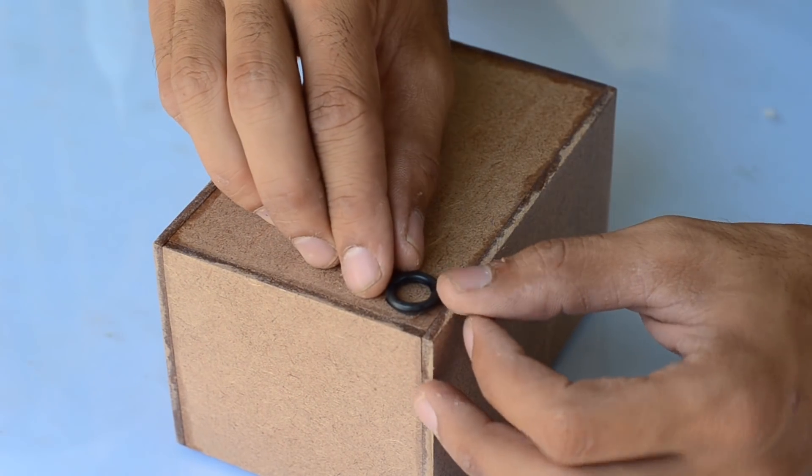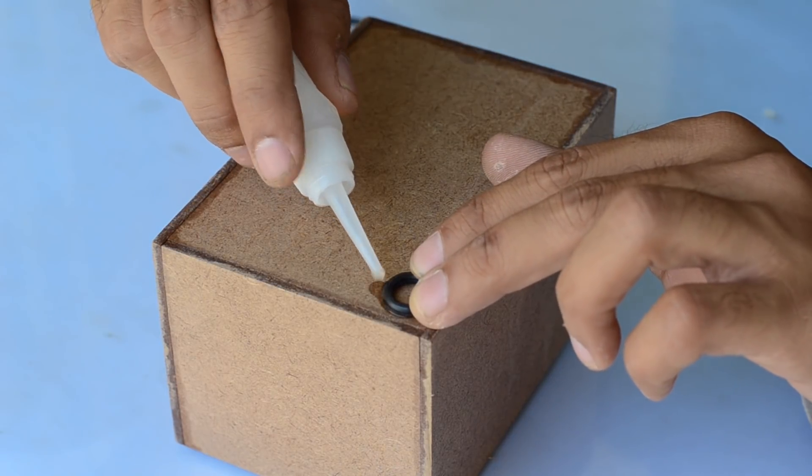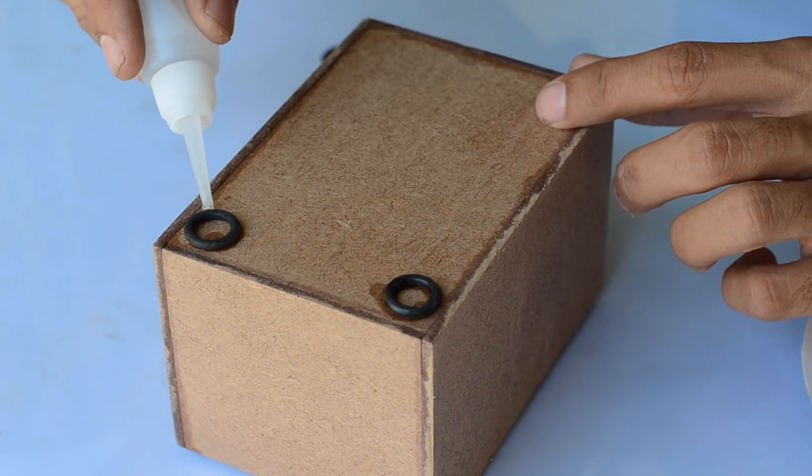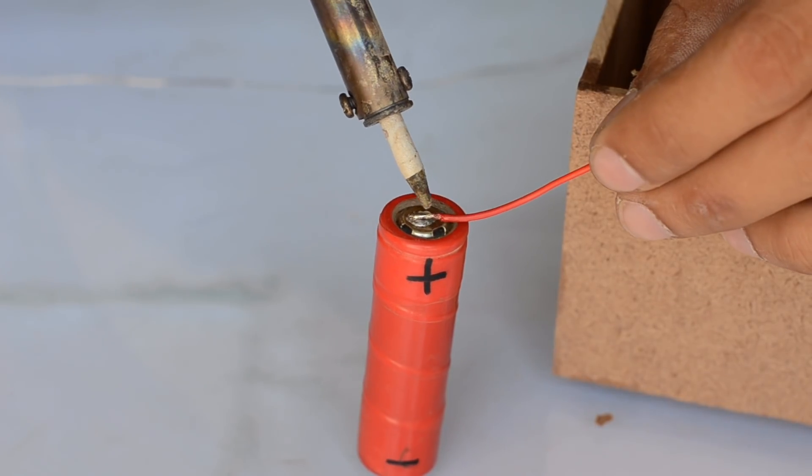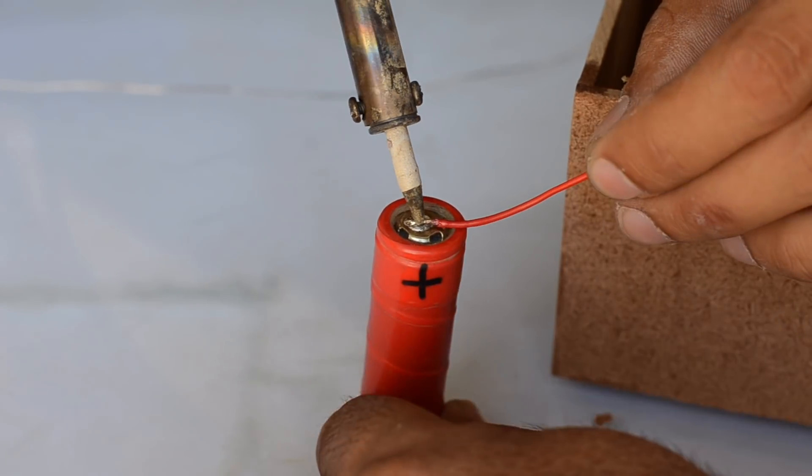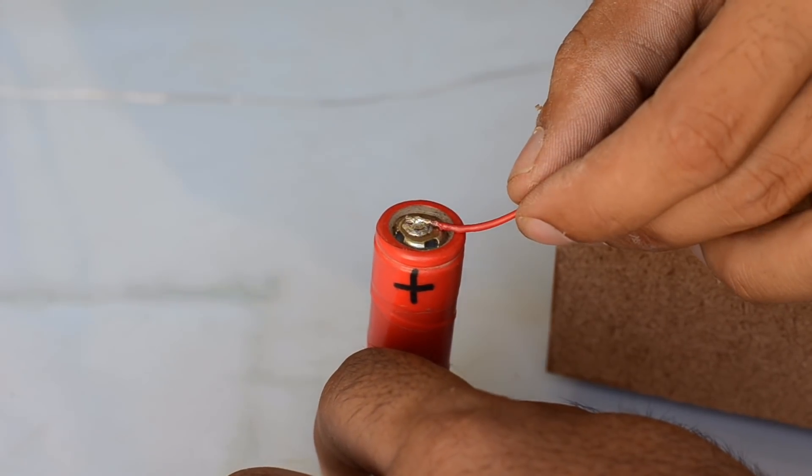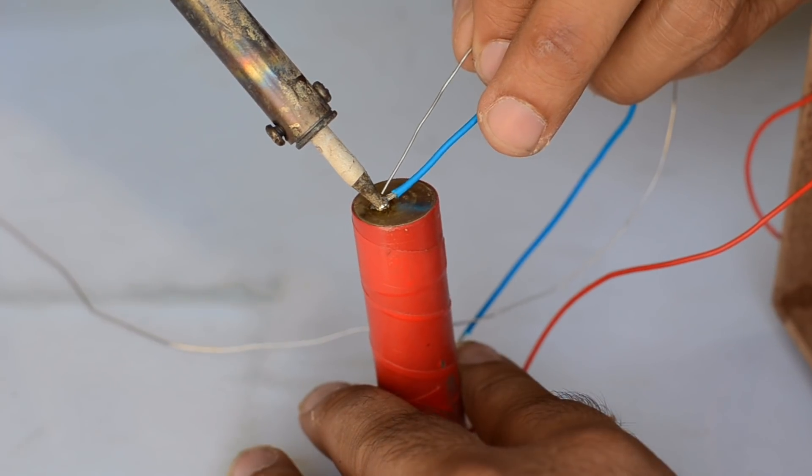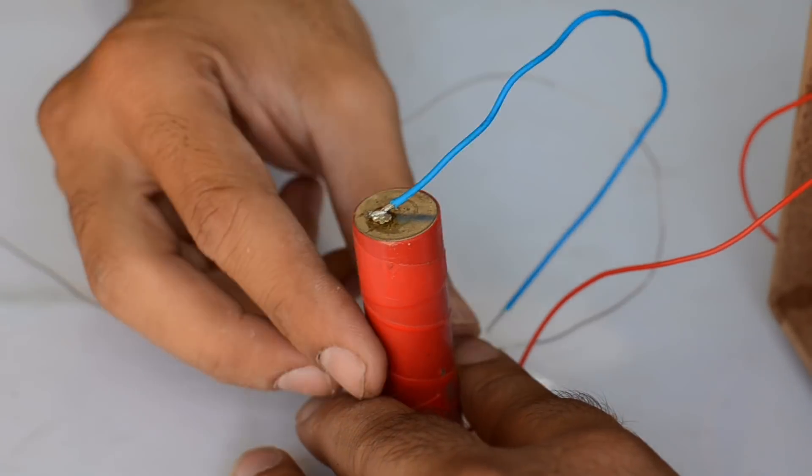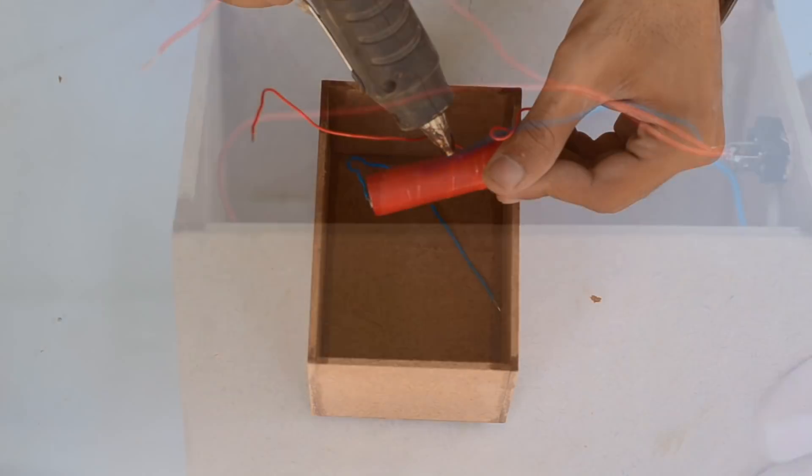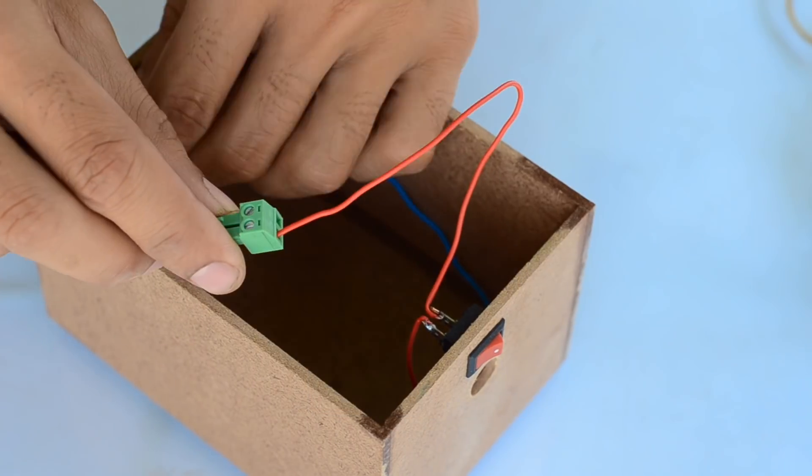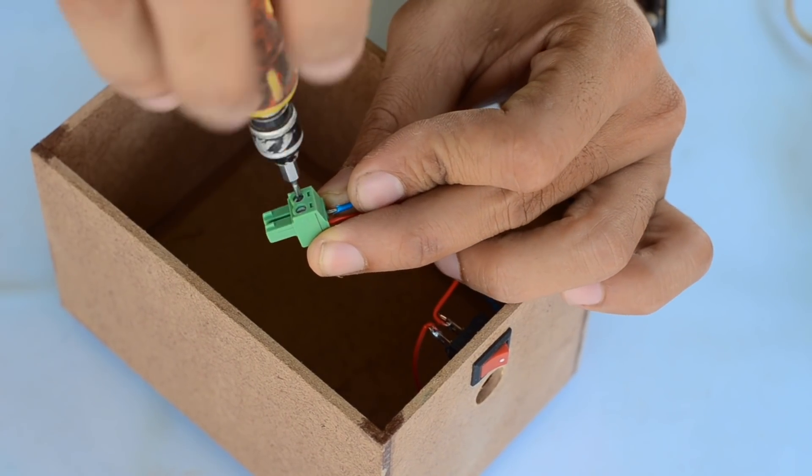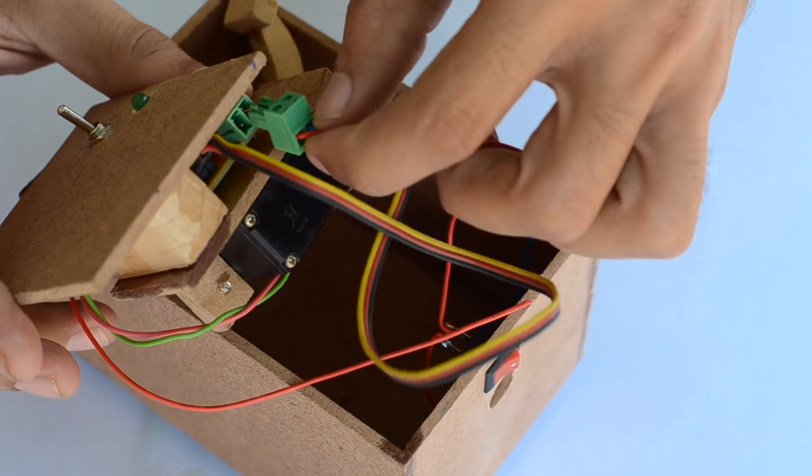I have also added rubber O-rings on the base which prevents the box from sliding on the surface while operating. This useless machine is powered by a lithium polymer cell that I've got from an old laptop battery. The cell is then glued to the base of the box and connected to the male side of the PCB connector through a switch, which then goes to the female side of the connector onto the PCB.